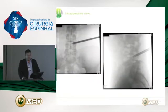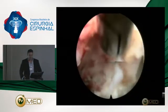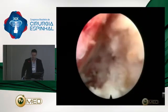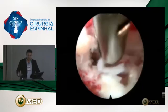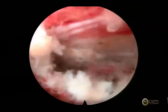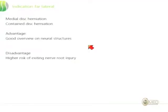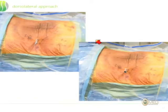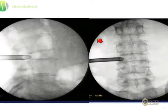This is a good indication for the far lateral approach — you see entering a little bit in the craniocaudal direction but aiming at the medial part of the disc space. The advantage of this approach is that you can see almost the complete dura to the opposite side. Left is cranial, right is caudal. This is a good indication for medial disc herniation and contained disc herniation.